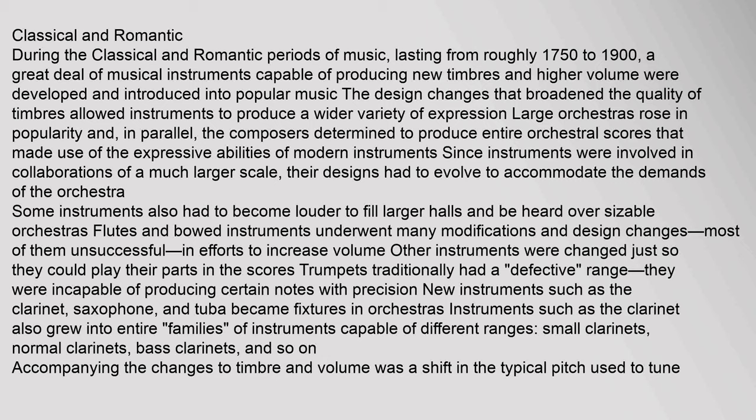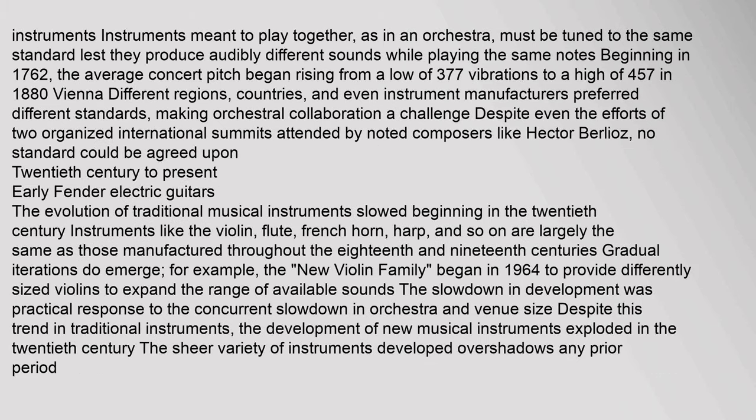Trumpets traditionally had a defective range, incapable of producing certain notes with precision. New instruments such as the clarinet, saxophone, and tuba became fixtures in orchestras. Those instruments such as the clarinet also grew into entire families of instruments capable of different ranges — small clarinets, normal clarinets, bass clarinets, and so on. Accompanying the changes to timbre and volume was a shift in the typical pitch used to tune instruments. Beginning in 1762, the average concert pitch began rising from a low of 377 vibrations to a high of 457 in 1880 Vienna. Despite even the efforts of two organized international summits attended by noted composers like Hector Berlioz, no standard could be agreed upon.